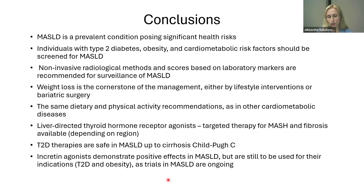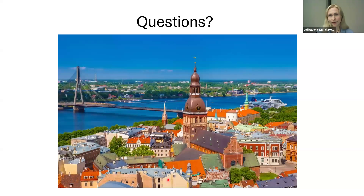To conclude: MASLD is a prevalent condition posing significant health risks. Individuals with type 2 diabetes, obesity, and cardiometabolic risk factors should be screened. Non-invasive radiological methods and laboratory marker-based scores are recommended for surveillance. Weight loss is the cornerstone of management via lifestyle or bariatric surgery. Physical activity and dietary recommendations parallel other cardiometabolic diseases. We now have targeted therapy for MASH — liver-directed thyroid hormone receptor agonists. Type 2 diabetes therapies are safe in MASLD up to Child-Pugh C cirrhosis, and incretin agonists show positive effects but should currently be used for their approved indications while MASLD trials are ongoing. Thank you.